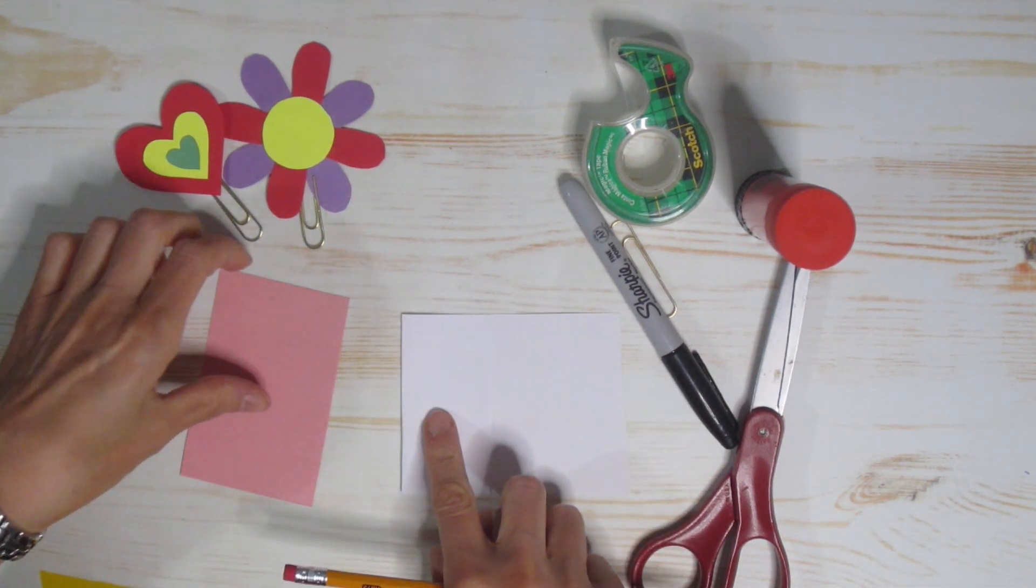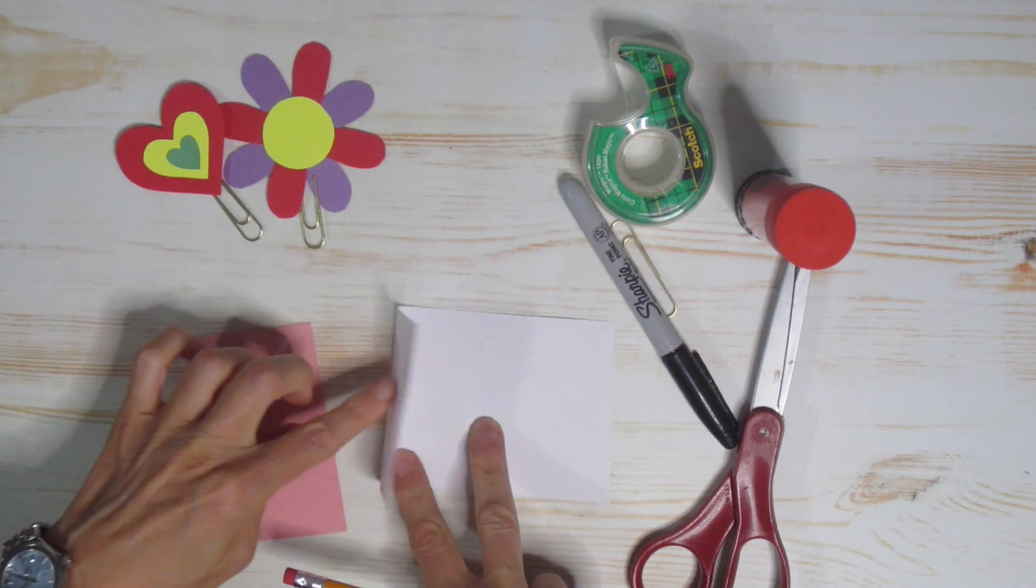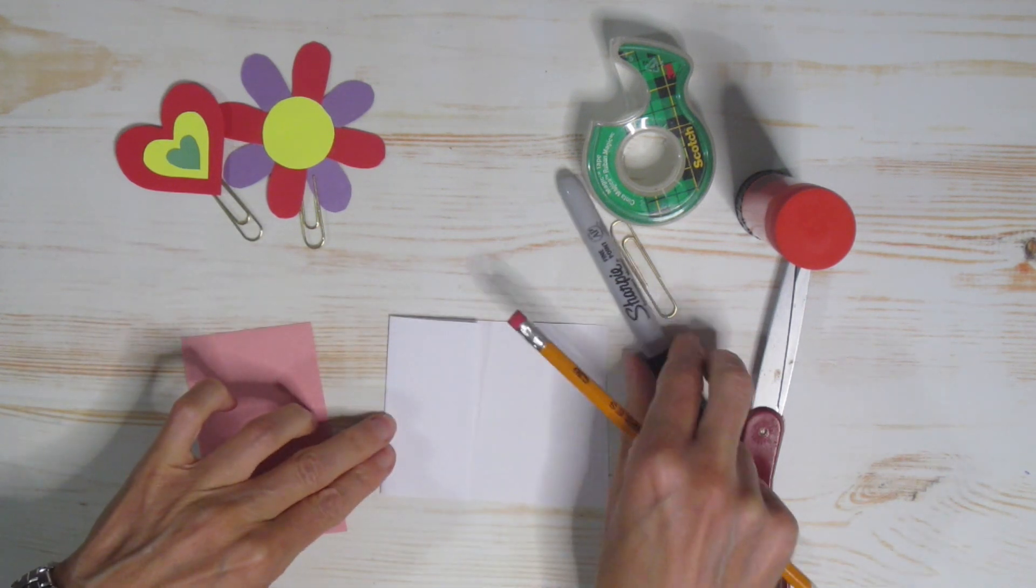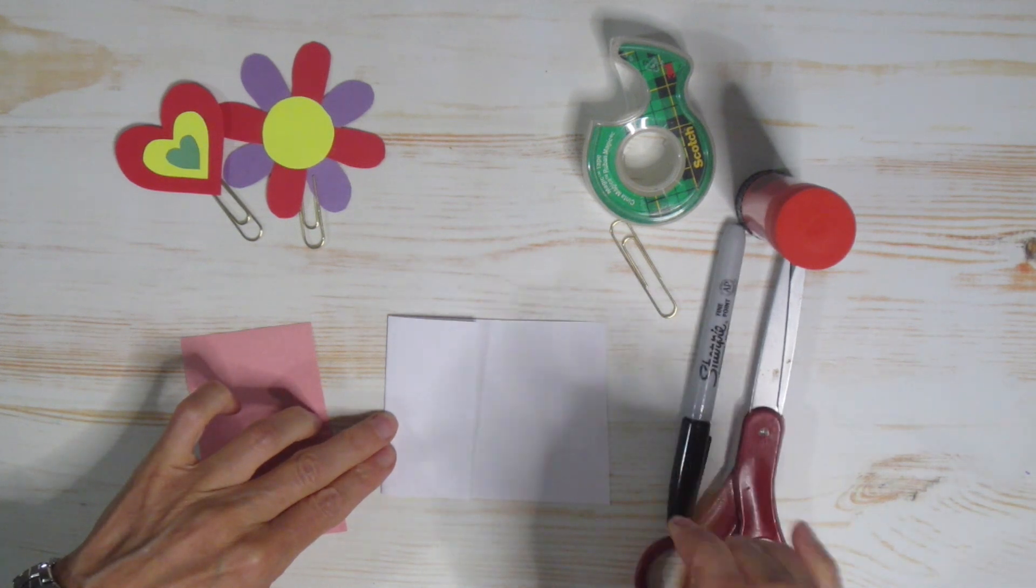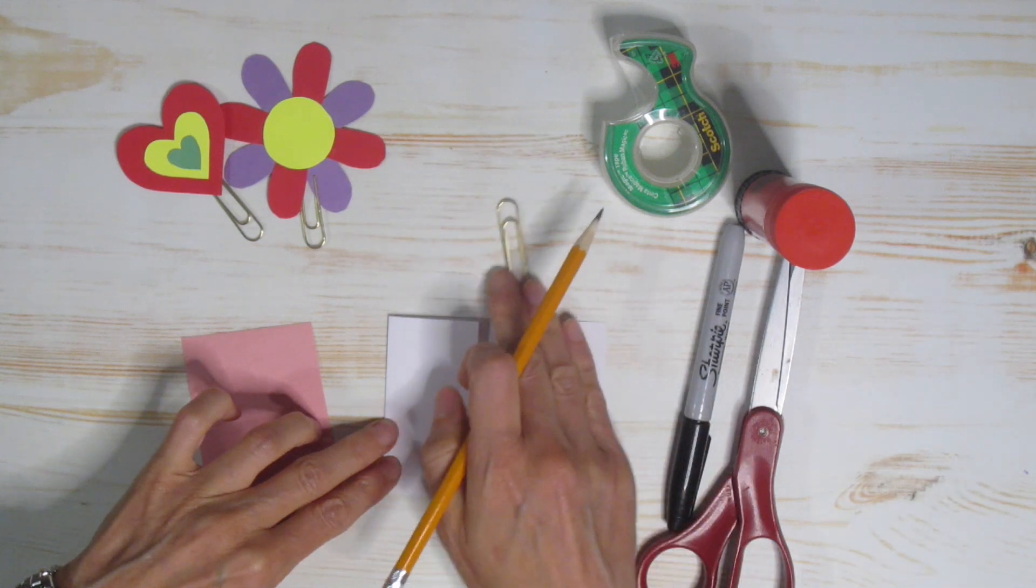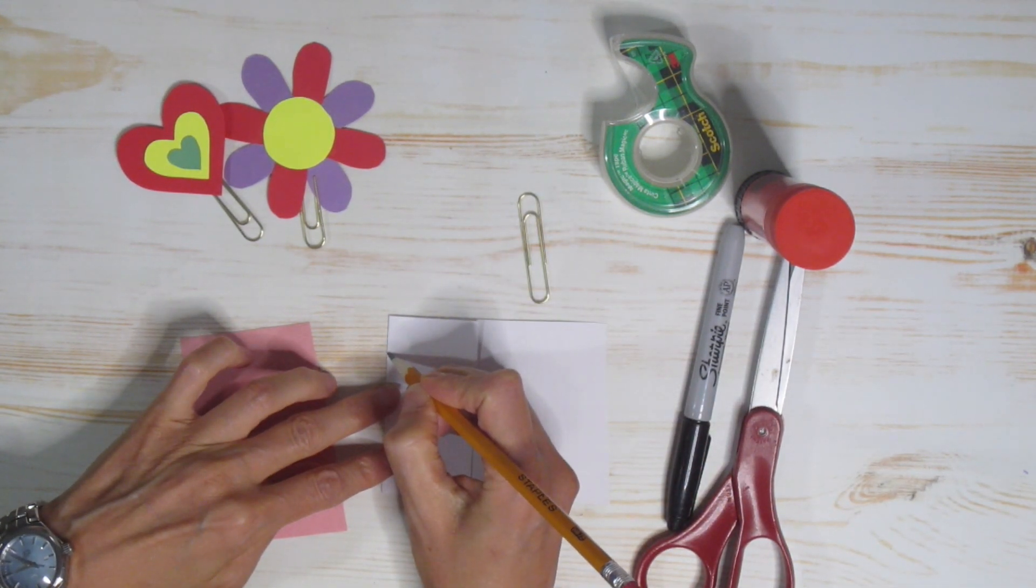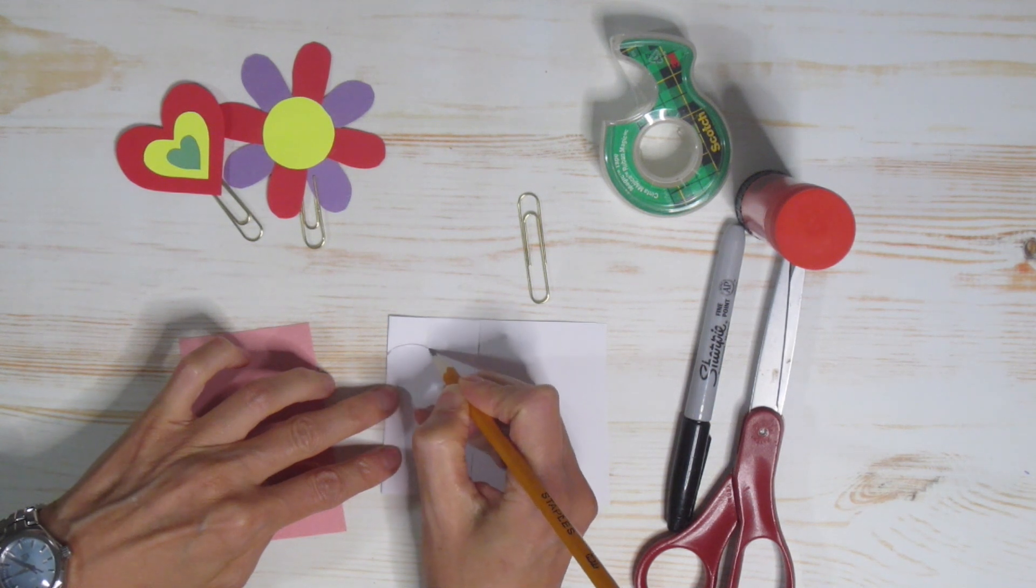Now I want to make a heart, and to do that, I've folded my paper. So here I've just created a fold line, and that will make my heart symmetrical. And remember, I am putting this onto my paperclip, so I don't want it too big. You could make it whatever size you want, just knowing that it has to go on that paperclip.